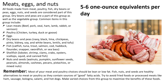This group also includes eggs, dry beans and peas — navy, black, lima, chickpeas, pinto, kidney, soy, and white beans — as well as lentils and tofu. Fish options include catfish, tuna, trout, salmon, cod, flounder, snapper, swordfish, or sea bass. Shellfish include lobster, shrimp, clams, crabs, oysters, scallops, squid, and canned fish.